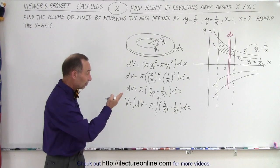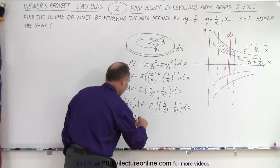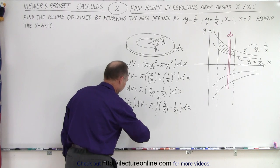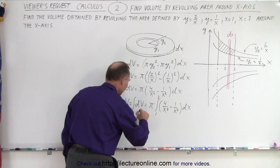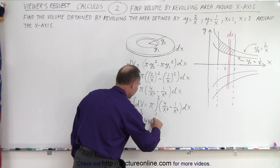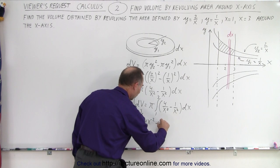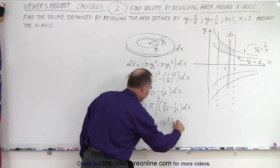If we're going to integrate that, we want to bring the x squared up. So this can be written as V equals the integral of π times from 1 to 3, the integral of 4x^(-2) minus x^(-2) times dx.